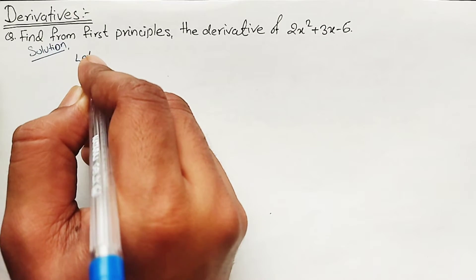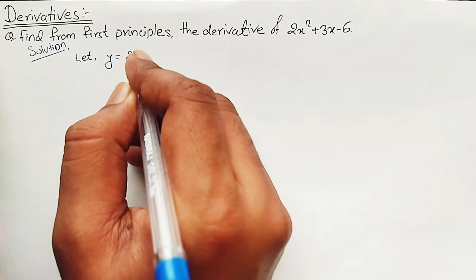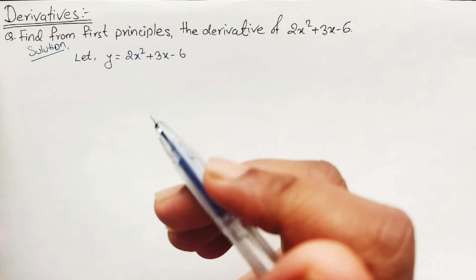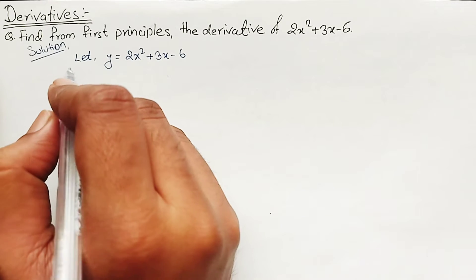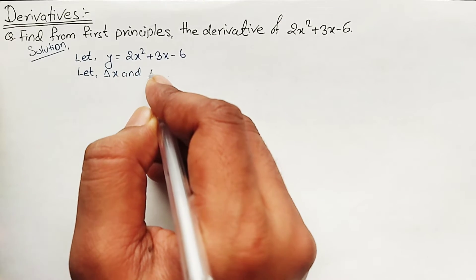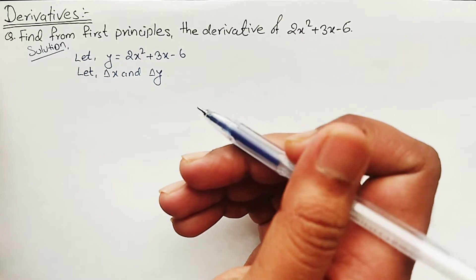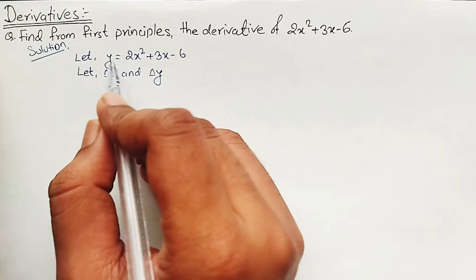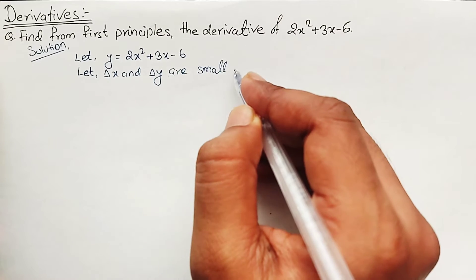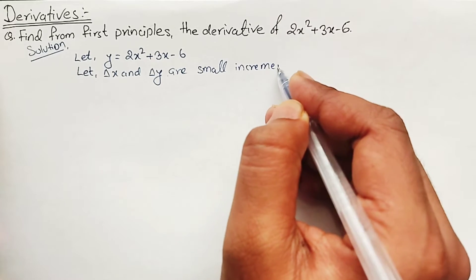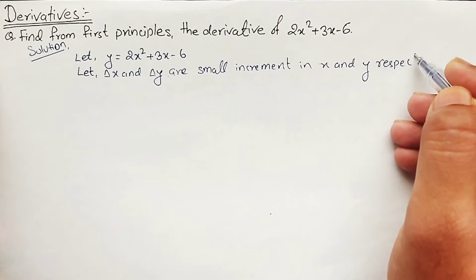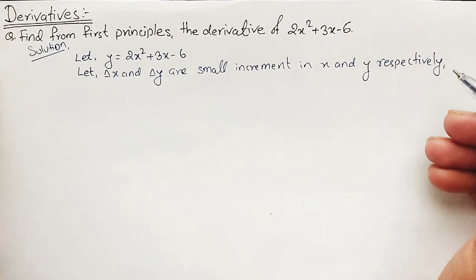Let the equation y equals 2x squared plus 3x minus 6. Next, let Delta X and Delta Y be a small increment in X and Y respectively — because derivatives are all about a small increment.